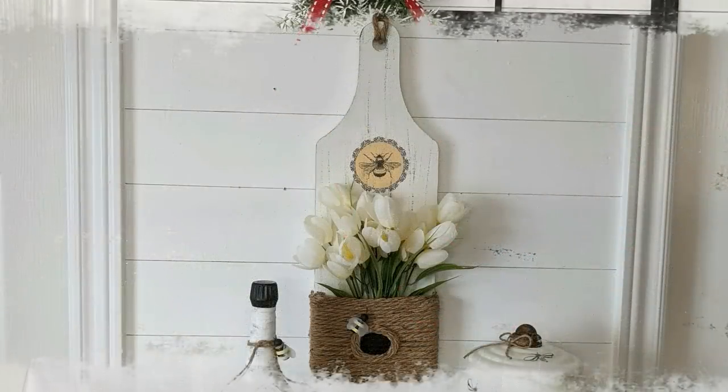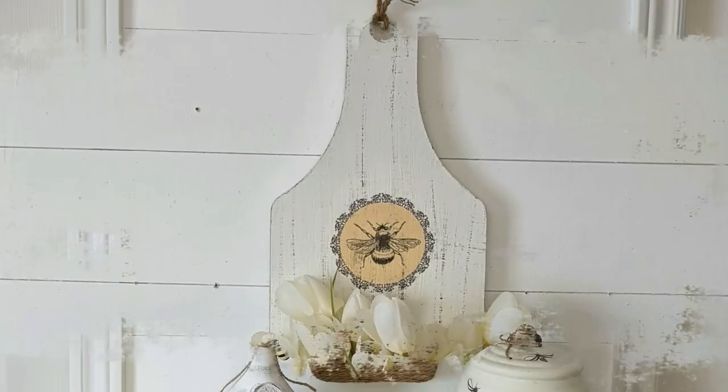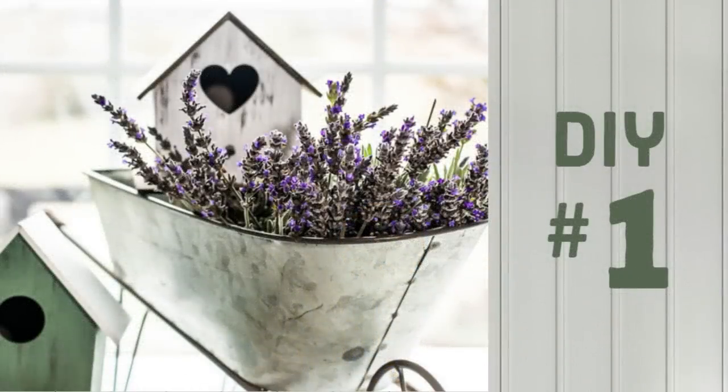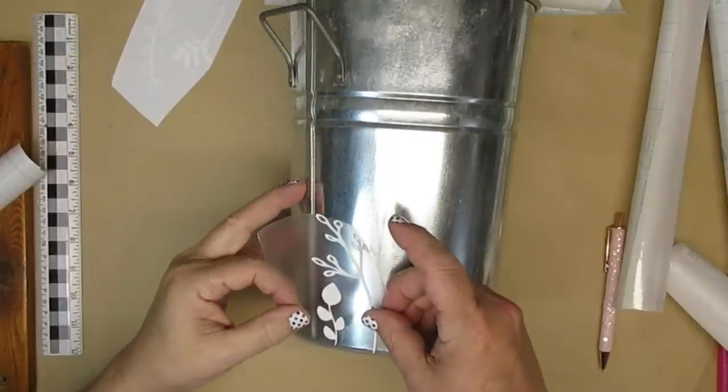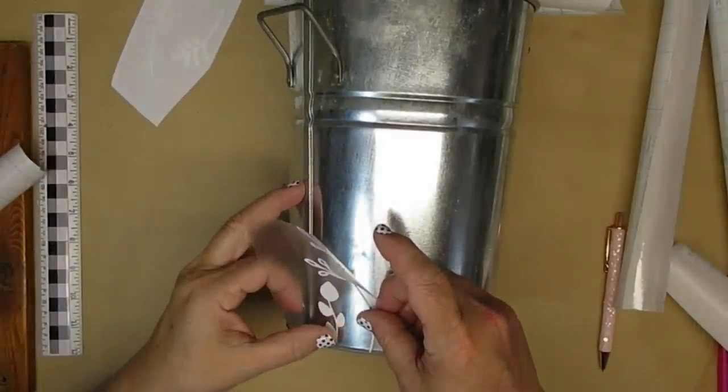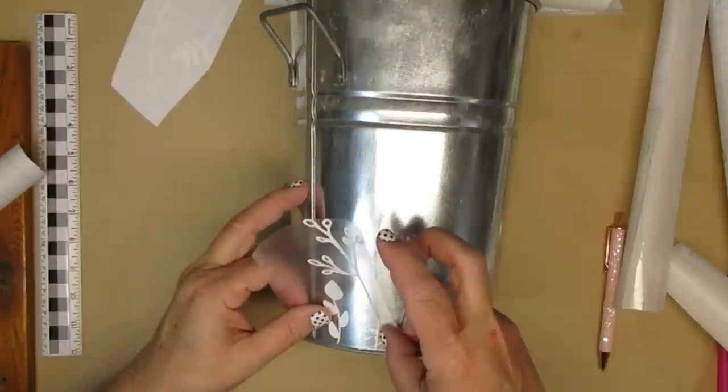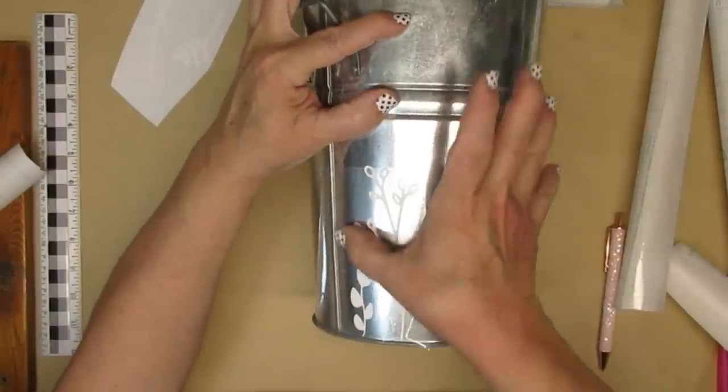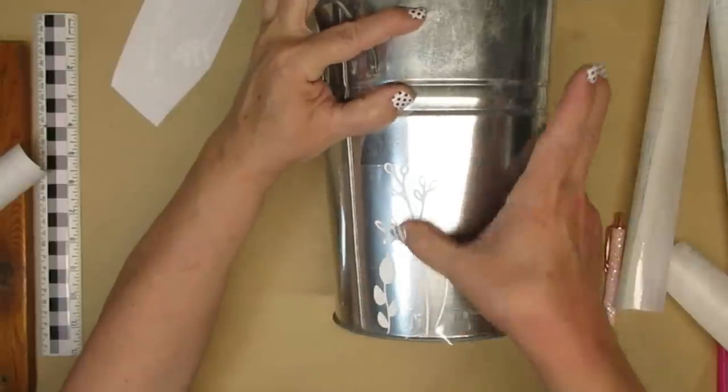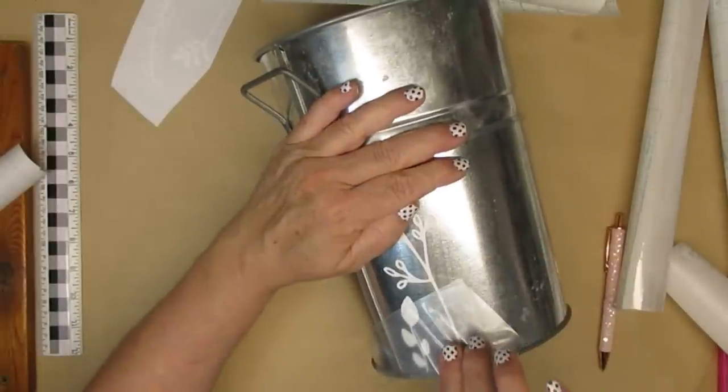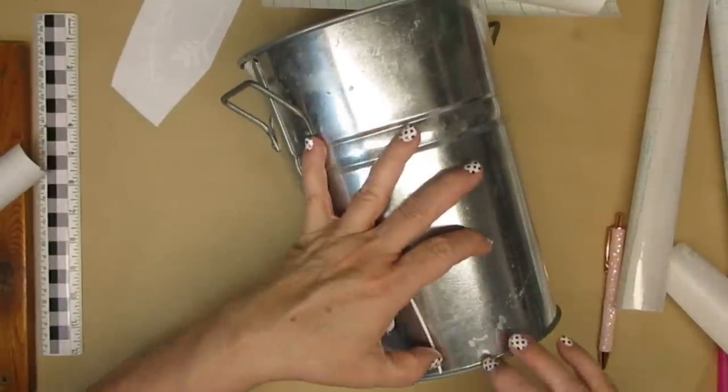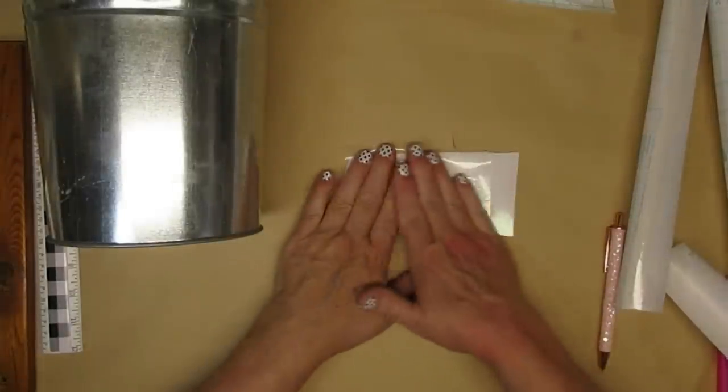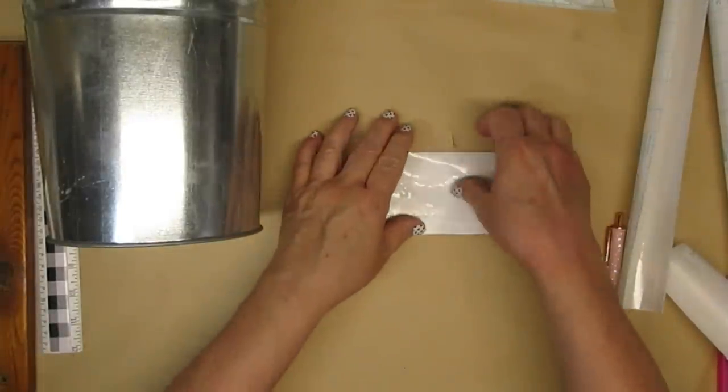This first thrift flip is using this big tin bucket that I got at the thrift store. It was part of my last haul, so you may have seen me talking about this one. It was $3.99. I cleaned it up and what I'm going to do is add some of these white sprigs all the way around the bottom of it. I thought that would be really cute.